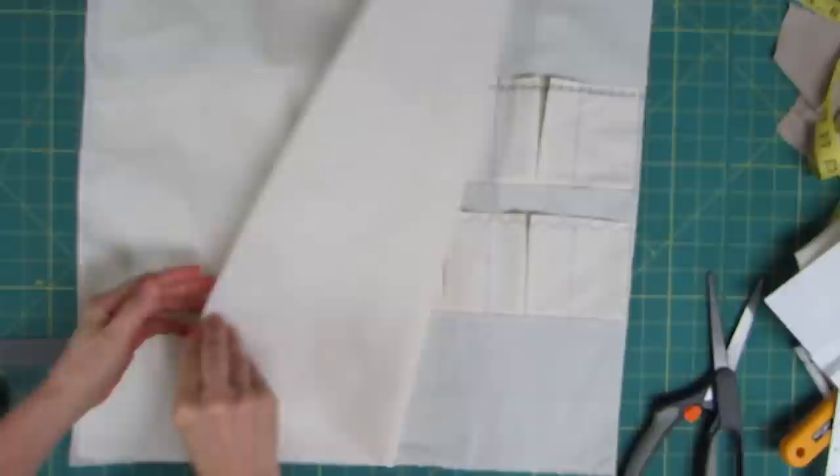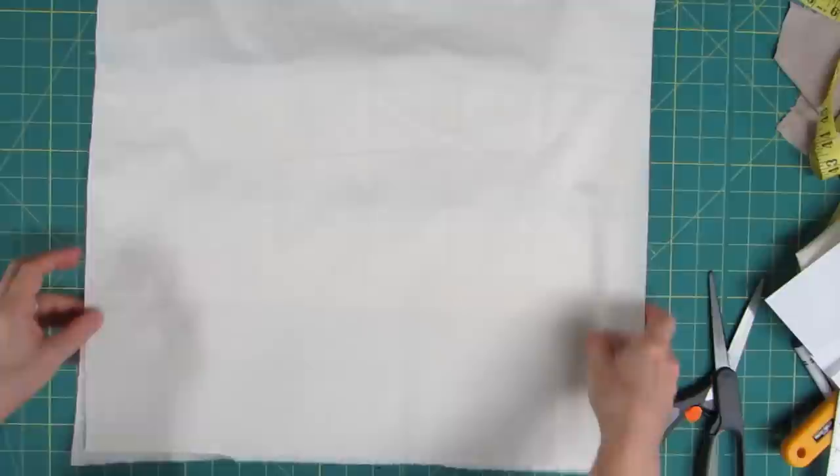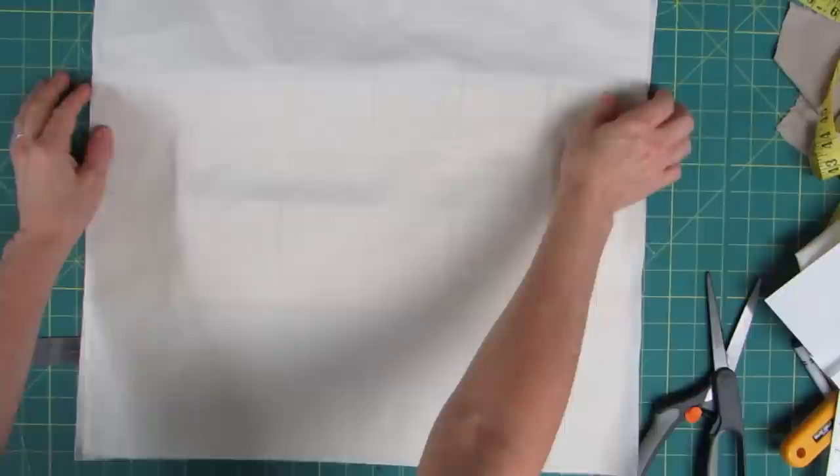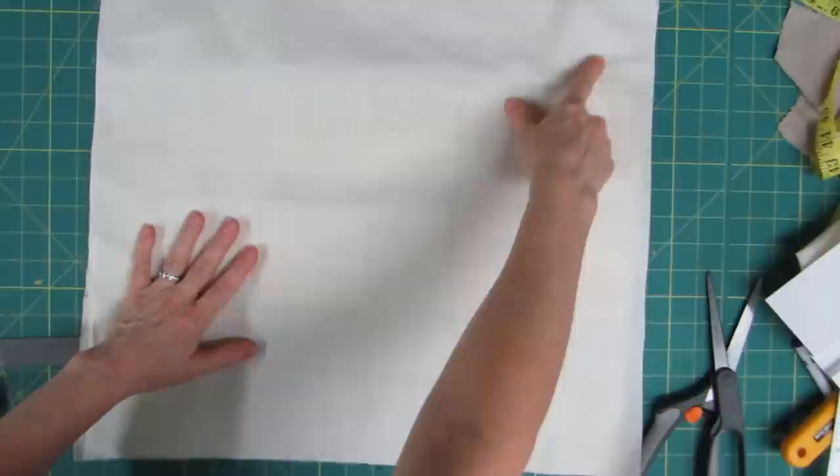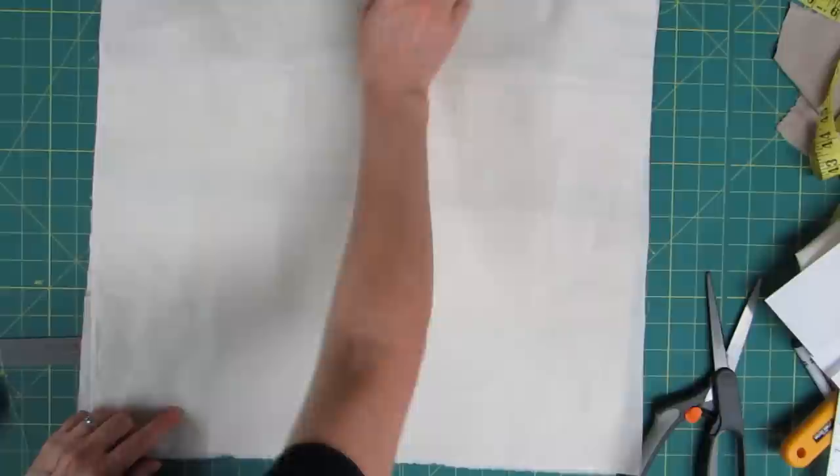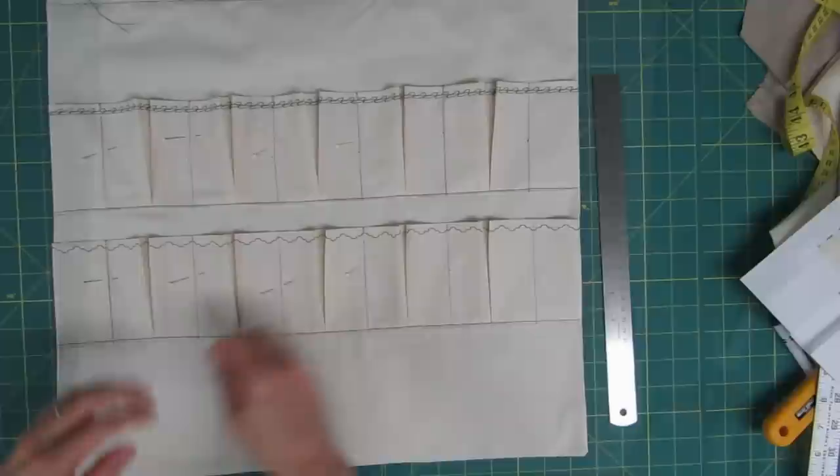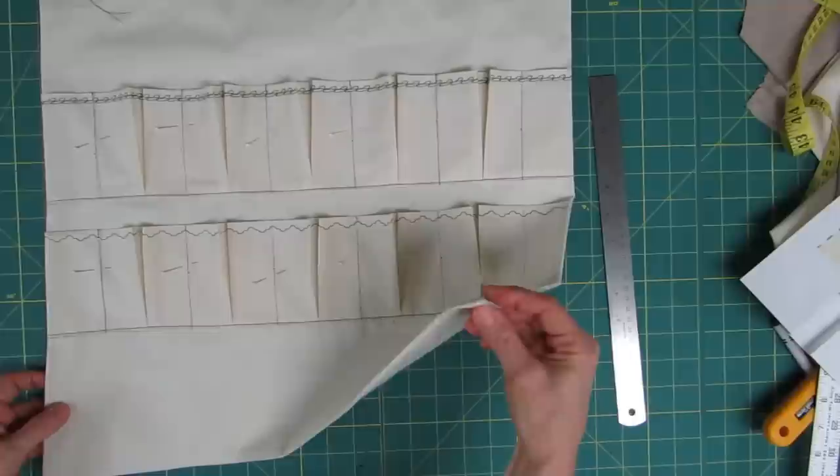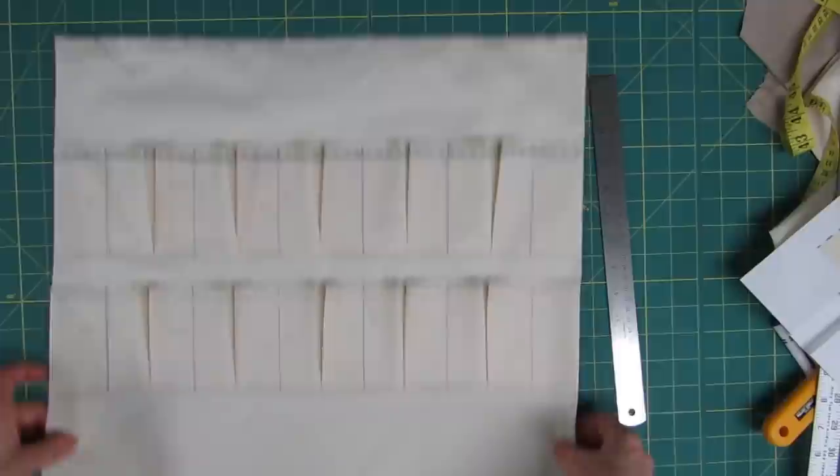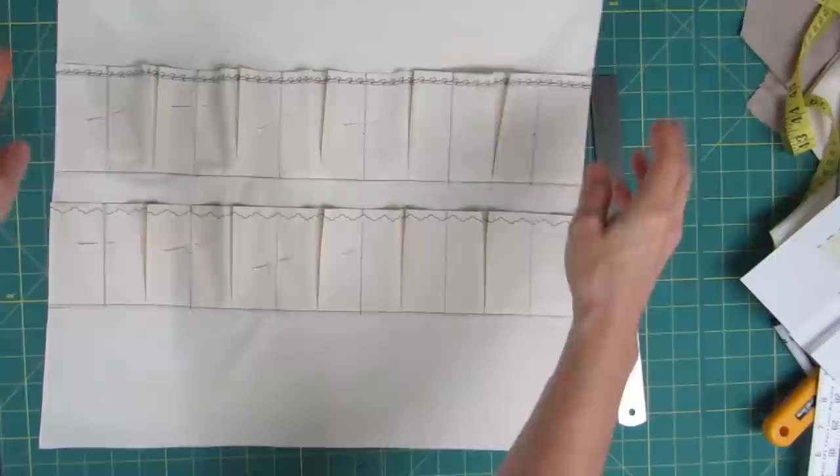And we want to put right sides together, pin the back to the front. And then using a one centimeter seam allowance, sew down both sides and across the bottom. Leave the top open. Once you have the seam sewn on the side and the bottom, trim the excess seam allowance and clip the corner, and then turn it right side out and press it really well around the edges. And then go ahead and run a line of basting across the top to hold those two pieces together.